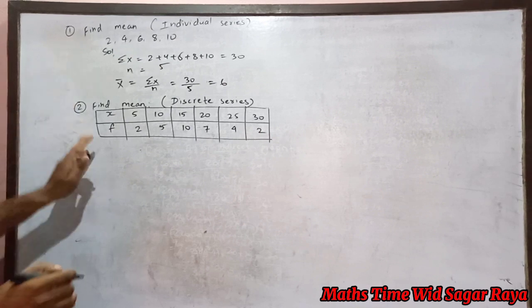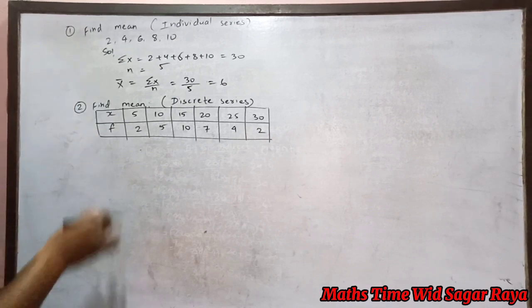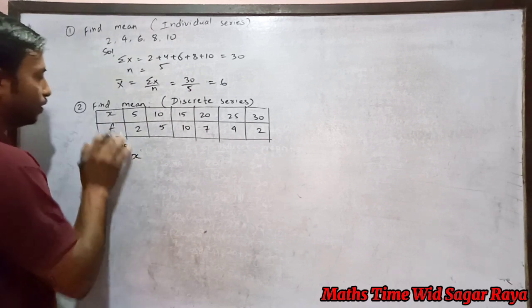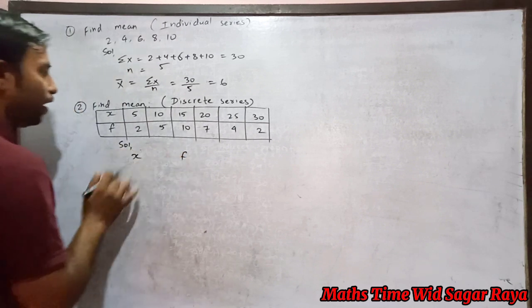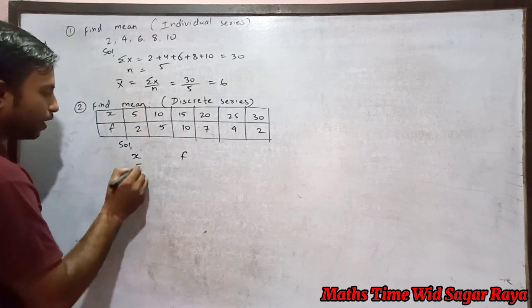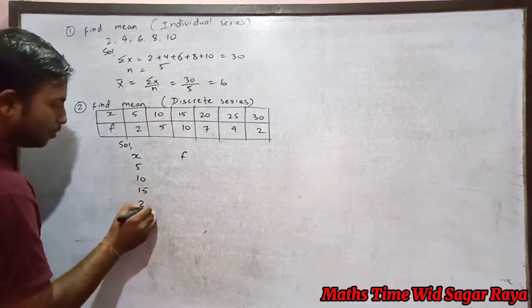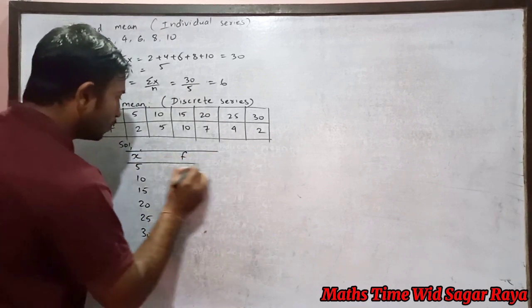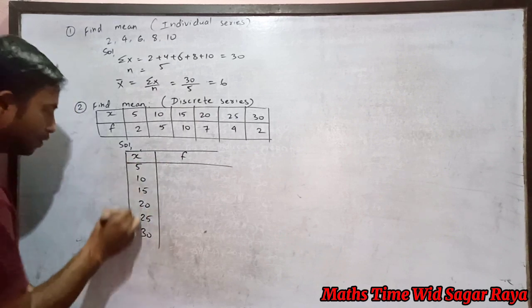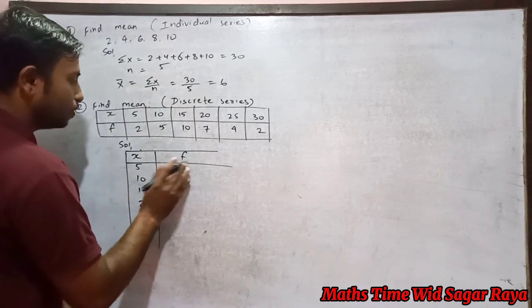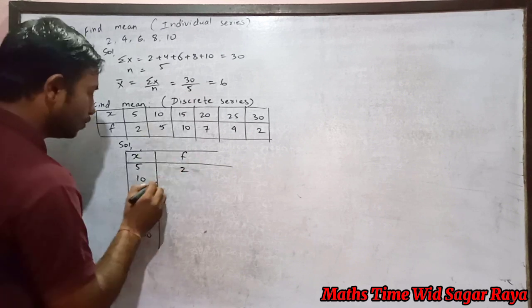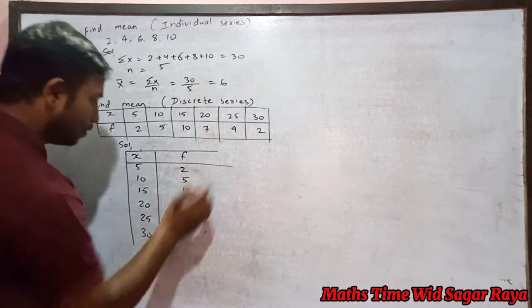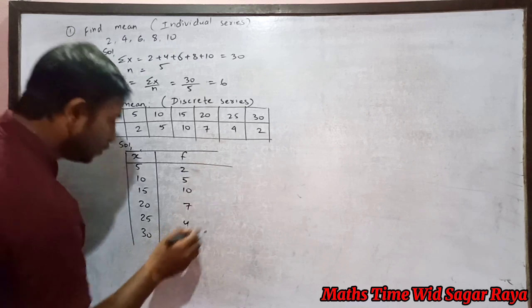Now let's go through second number. In second number, first we have to write the x here, then we will write here f. Let's write all the data here: 5, 10, 15, 20, 25, 30. Then let's take the frequency also: 2, 5, 10, 7, 4, then 2.